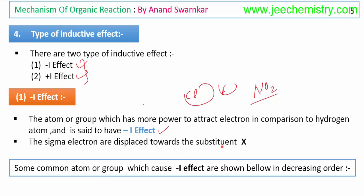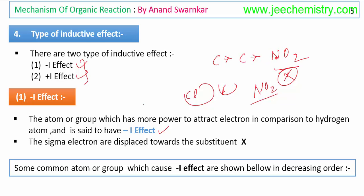The sigma electrons are displaced towards the substituent X. For example, in a compound with NO2 as the substituent — a negative inductive effect group — electrons will shift towards this electron-withdrawing group. This produces the negative inductive effect. Only sigma electrons are displaced towards the electron-withdrawing group, not pi electrons.